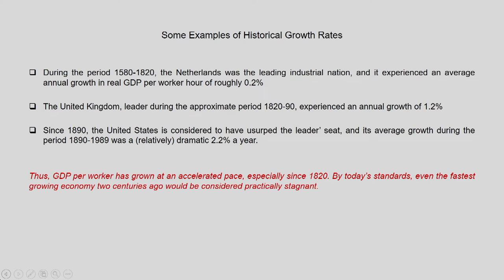Before discussing Kuznets' contribution, let us look at some examples of historical growth rates to understand the clear distinction between modern economic growth and historical economic growth. During 1580 to 1820 — covering the 17th and 18th centuries — the Netherlands was the leading industrial nation and experienced an average annual growth in real GDP per worker hour of roughly 0.2 percent, which is nothing comparable to what we experience today with growth rates of 7 to 9 percent.